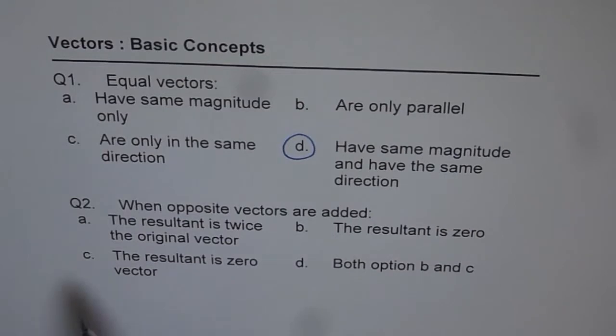Well, we will think about it. And C is, the resultant is a 0 vector. Option D is both B and C. Well, when we say resultant is 0, it is a wrong statement.